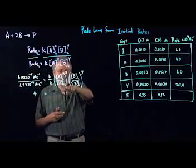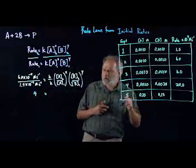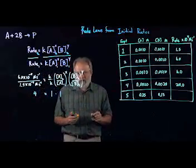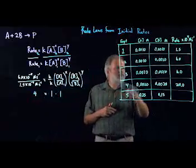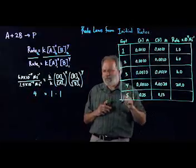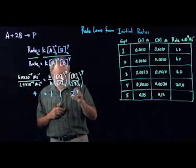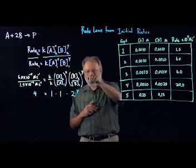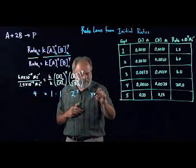This will be A2 over A1, that's .001 divided by .001. Well, that's 1 to the x power. 1 to any power is 1. So actually, the only thing that's going to be changing is B. So we have .002 divided by .001, and that ratio is 2. So 2 is raised to the y power, and so we figure out that y equals 2.